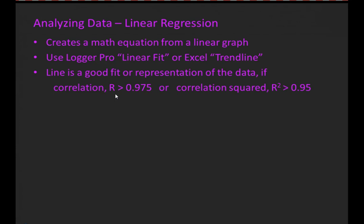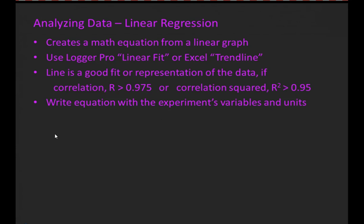A perfect correlation would be 1.0, and correlations can be negative or positive—I'm talking about the absolute value. If you're using LoggerPro, it will give you the correlation r. If you're using Excel's trend line, it'll give you the correlation squared. Once we've run the linear regression and determined it's a good fit, we need to write the equation with the experiment's variables and units. In math we learned y equals mx plus b, where m is the slope and b is the y-intercept. However, y and x are just generic symbols—in science we're measuring specific variables.